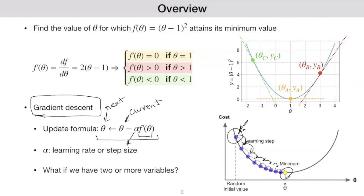Right now we basically have everything we need for gradient descent, except we need to answer: what if we have two or more variables? Because then we cannot technically define the derivative. That's the thing we're going to address in the next slide.